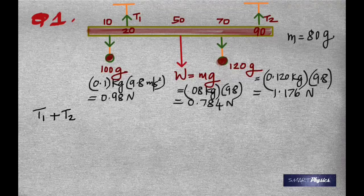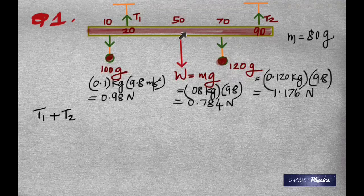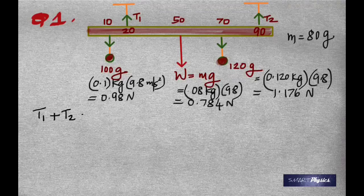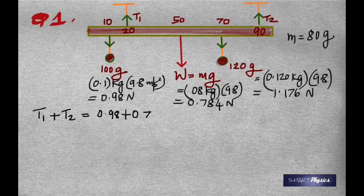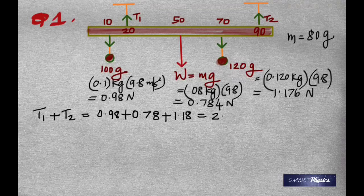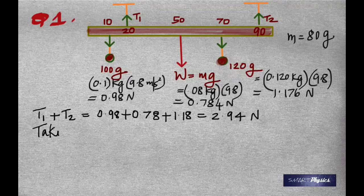There are two conditions for stable equilibrium. The first condition is that the total upward forces should equal the total downward forces — the net force along the y-axis is zero. So T1 plus T2 should equal the sum of the three downward forces. Adding all three gives 2.94 Newtons, so our first equation is T1 plus T2 equals 2.94.